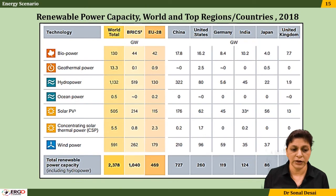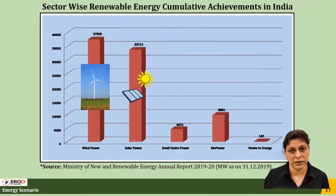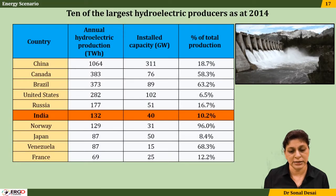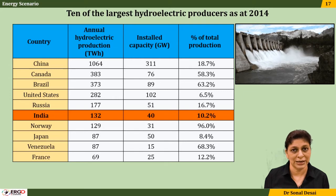For renewable sources, where India stands and where BRICS and other countries stand is discussed. Sector-wise renewable energy production — including wind, solar, and biomass — is covered. Each renewable energy source is also explained individually, such as India's hydro potential, how much has been tapped, and what future expansion is still possible.